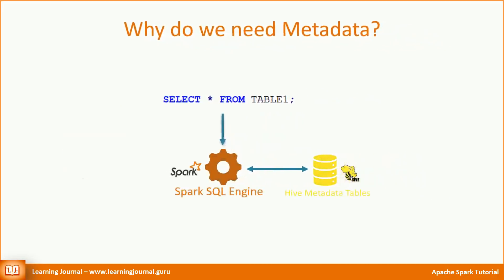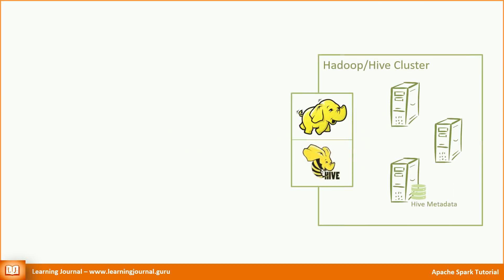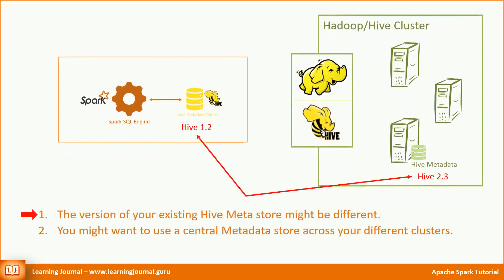The creators of Spark decided to reuse the Hive Metadata store instead of developing a new one. That means Spark comes with a bundled Hive Metastore. However, you might already have a Hive cluster with a functioning Hive Metastore and want to bring Spark into your ecosystem. That requirement causes two types of challenges. The version of your existing Hive Metastore might be different from the one bundled with Spark, and you might want to use a central Metastore across your different clusters.